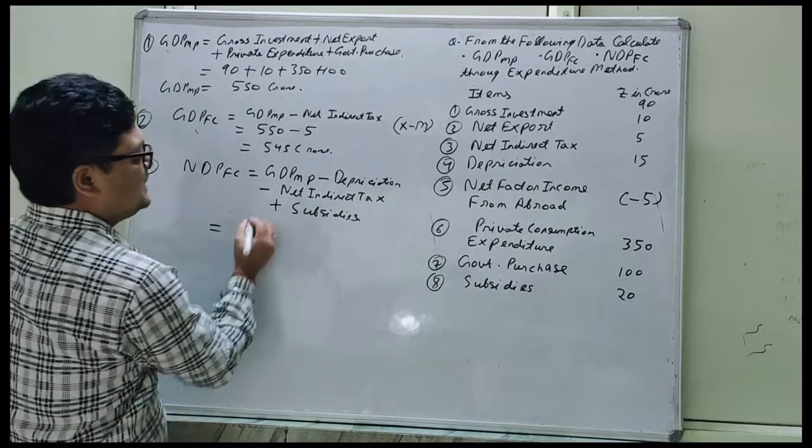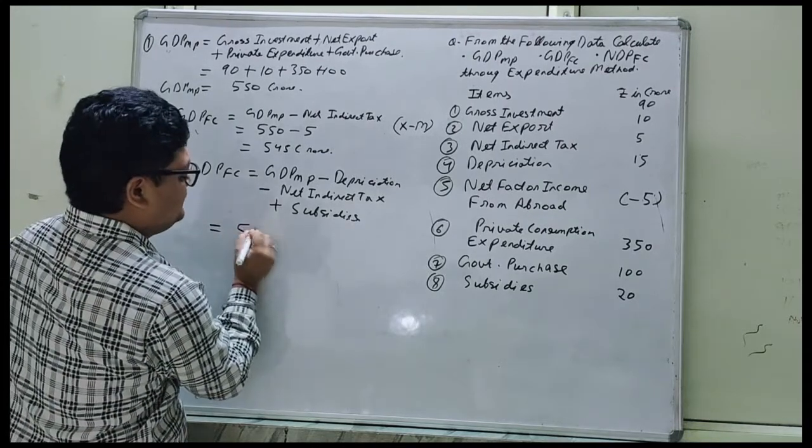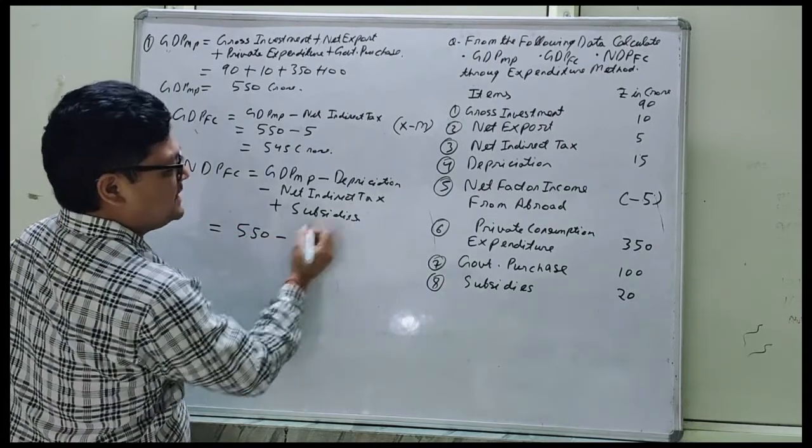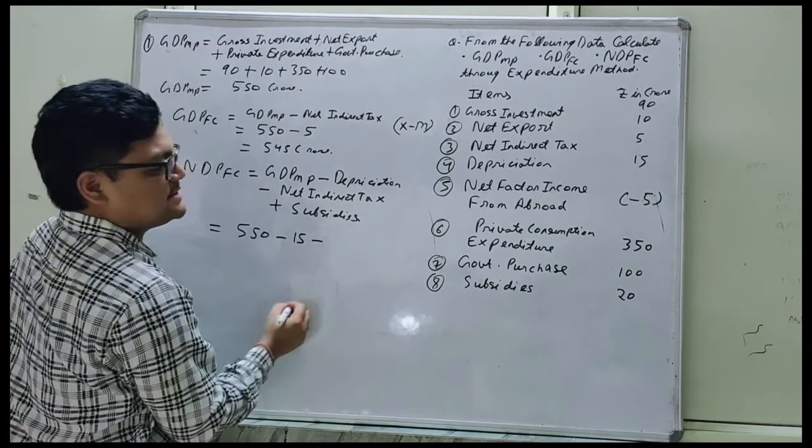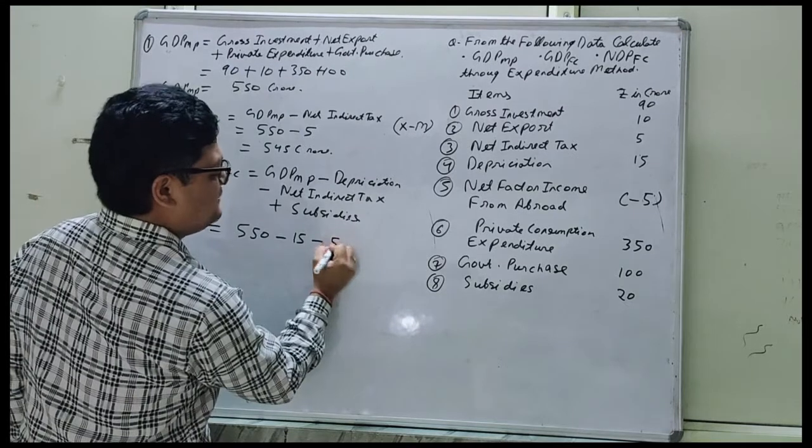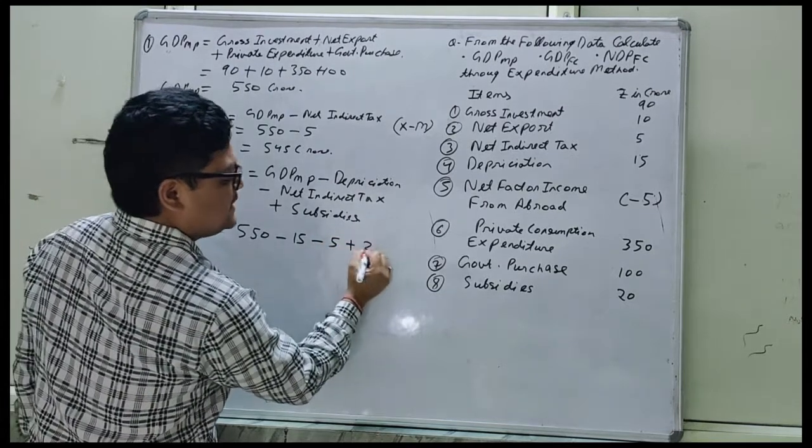So it will become 550 minus depreciation 50, minus net indirect tax is 5, plus subsidy is 20.